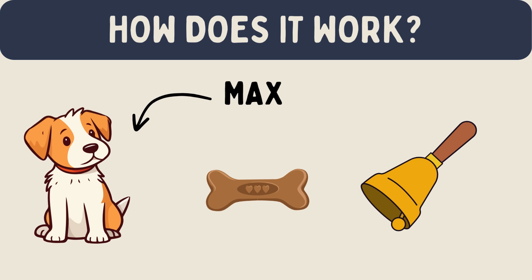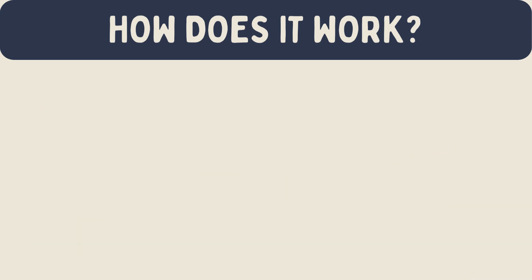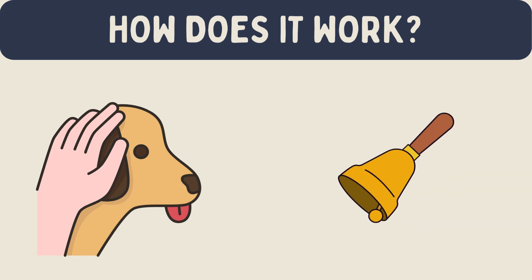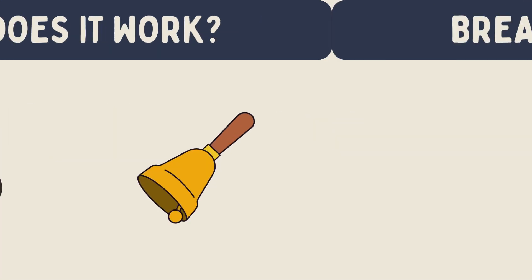This is called classical conditioning. Now, let's say every time Max gets excited, you give him a pat on the head. Eventually Max starts to get excited not just when he hears the bell, but also when he sees you getting ready to give him a pat. This is higher order conditioning.